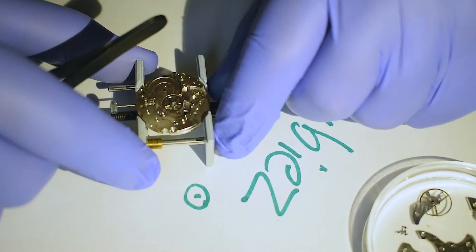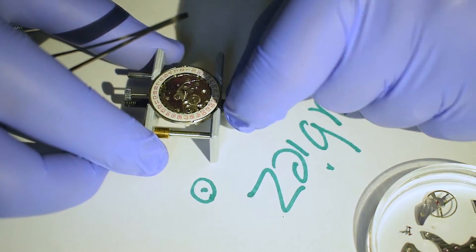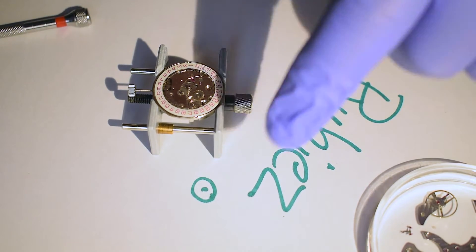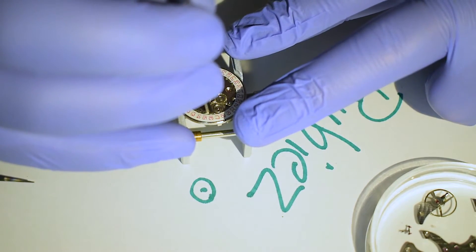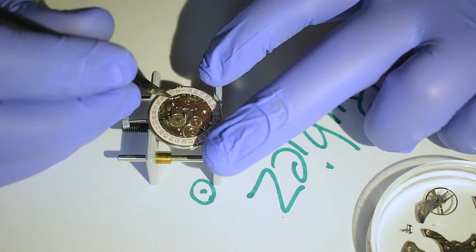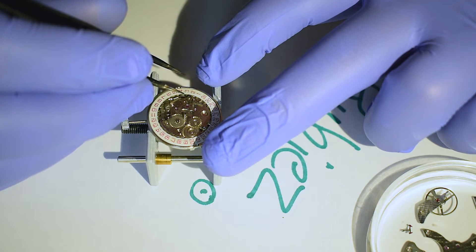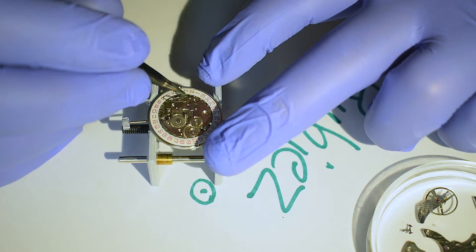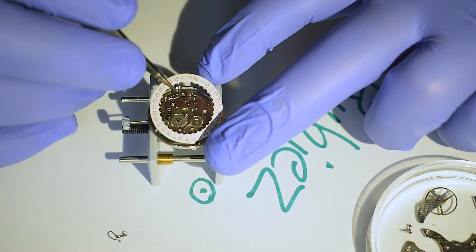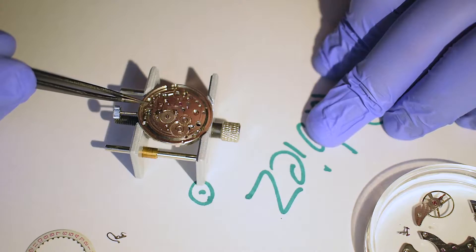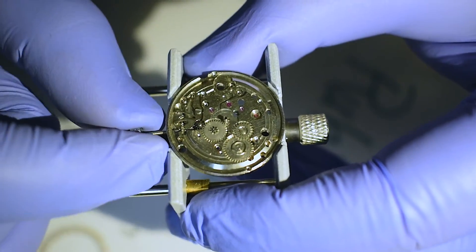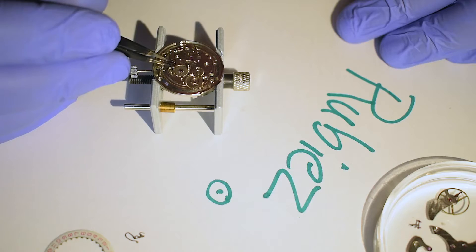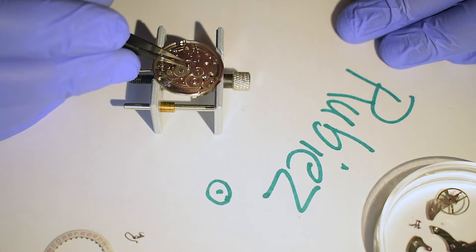So the next step is to remove this bracket here. And here we have the other side of the movement, which contains the complications. Now this is the first time for me to actually disassemble a movement similar to this. So I'll assume that I have to remove this bracket over here. I don't really know how these function. So this here is the spring for the calendar. This is the calendar ring. And here you have the yoke. This here is the yoke spring. It actually shifts when you move from one to another position.